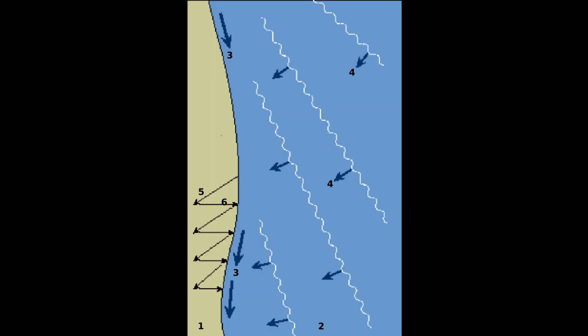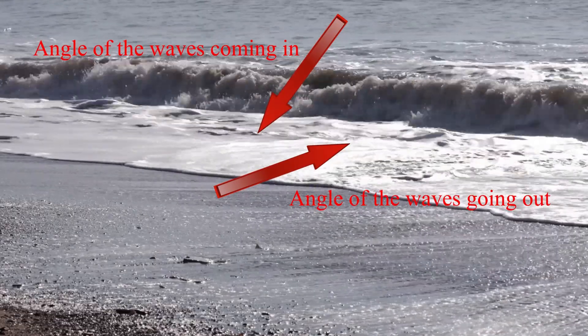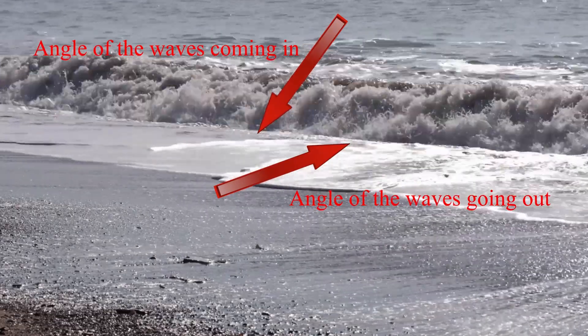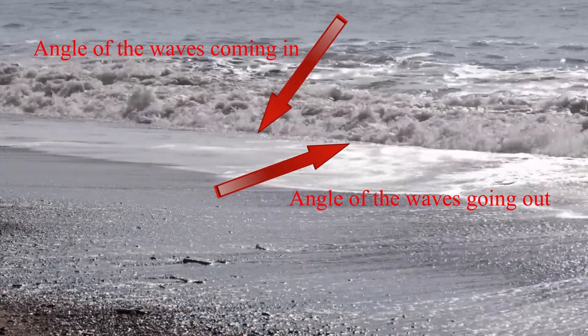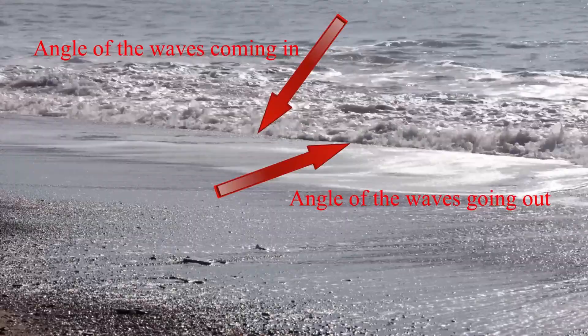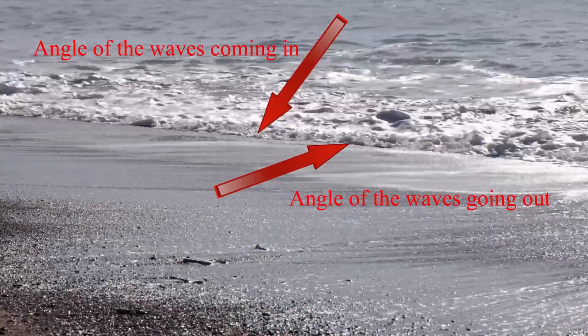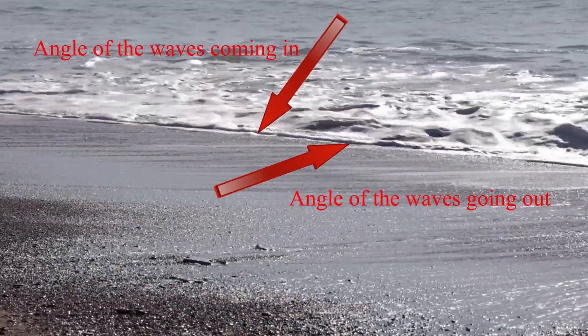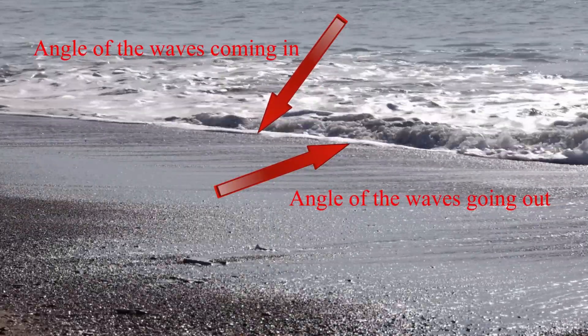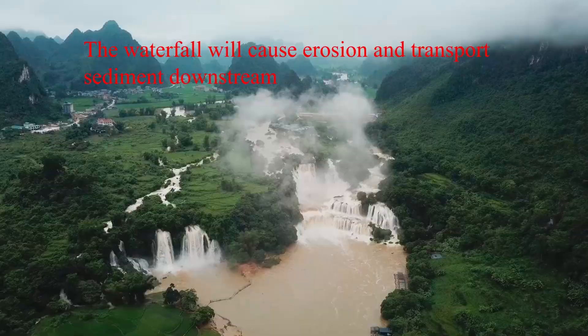The sand on a beach can be moved along the coastline by longshore drift. This is where the wind will push waves onto the beach at an angle, which will then drag sand away from the shoreline. This process repeats itself, and eventually the sand will be shifted along the coast.